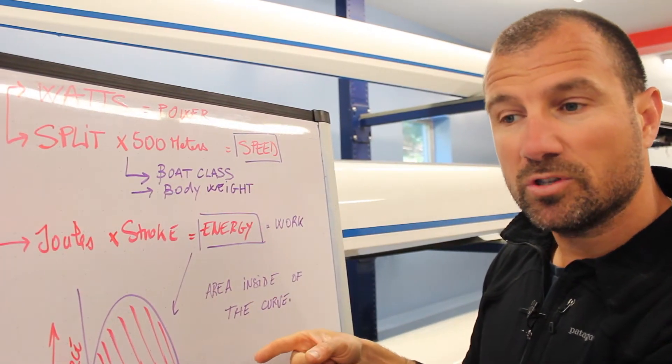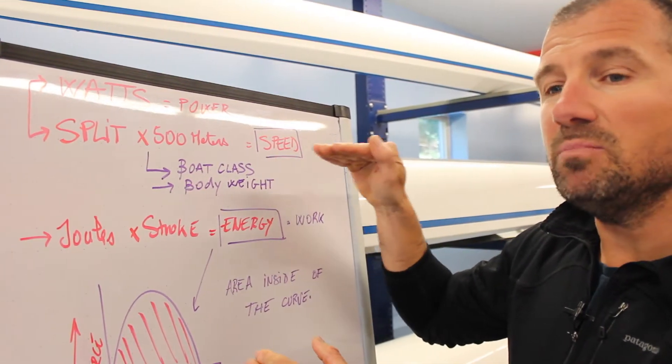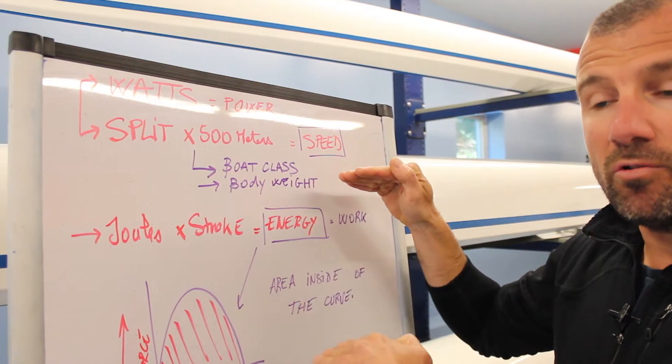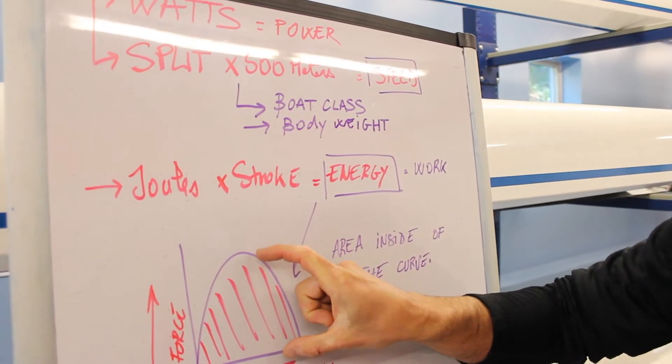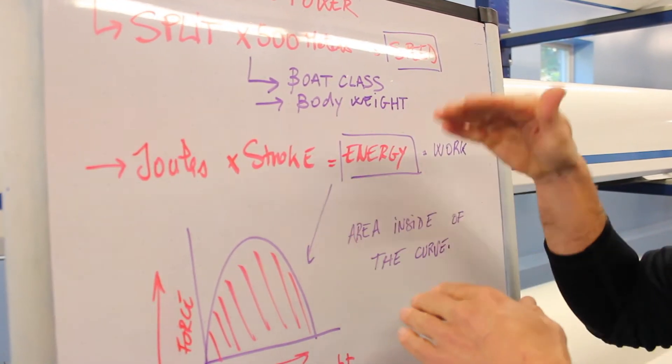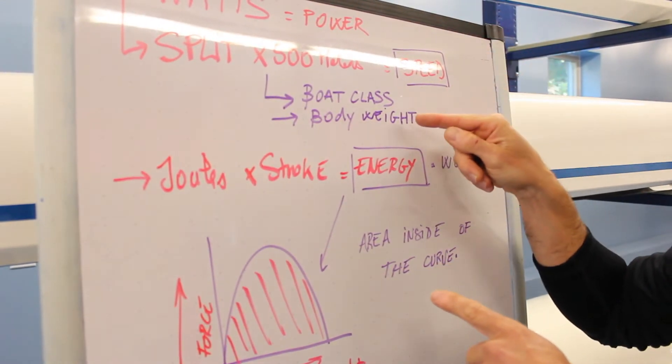But we need to put more strokes, so you can keep the same speed changing the stroke rate. So the stroke length, the force you apply, the joules, and the frequency is going to change the watts and the split.